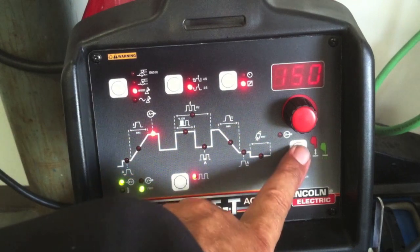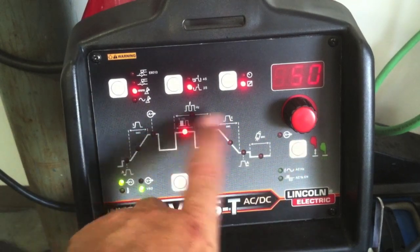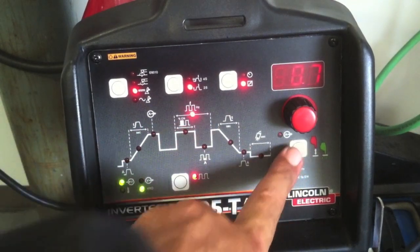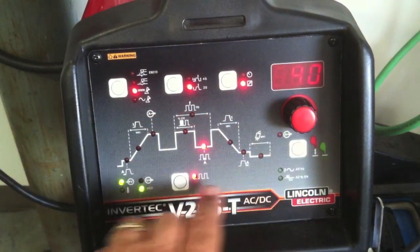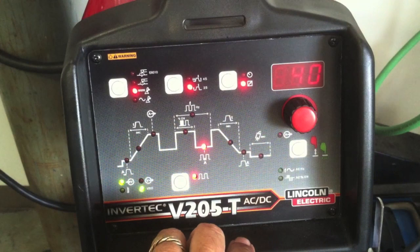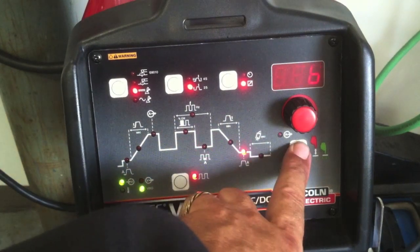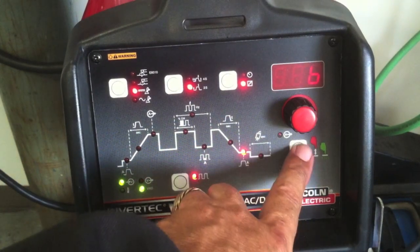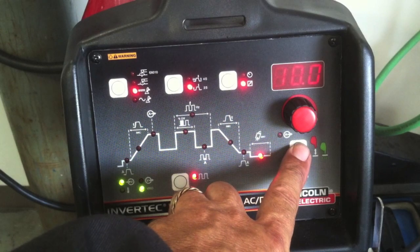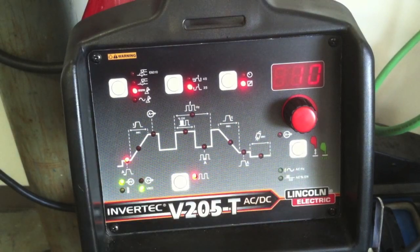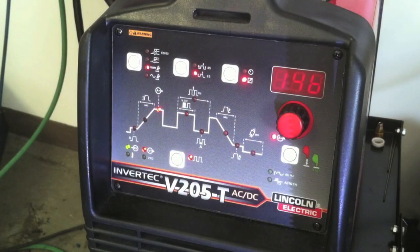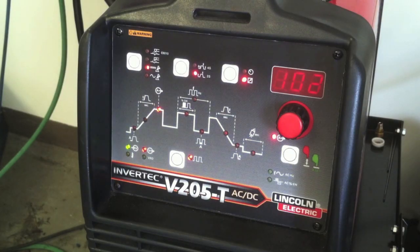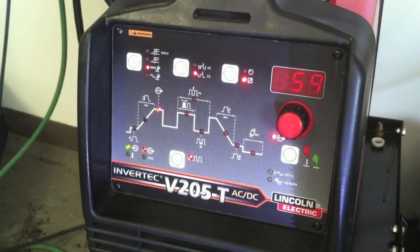Shifting gears again here, I'm going to set this Invertec here for pulsing on the steel. I set it to 0.7 pulses a second, 40% background current, that's a percentage of the amperage that I'm going to be using, and post flow set at 10 seconds. Start current set to 10, but as this thing welds you can see it bounce back and forth from 150 amps all the way back down to about 60, which is 40 percent of the 150 max.